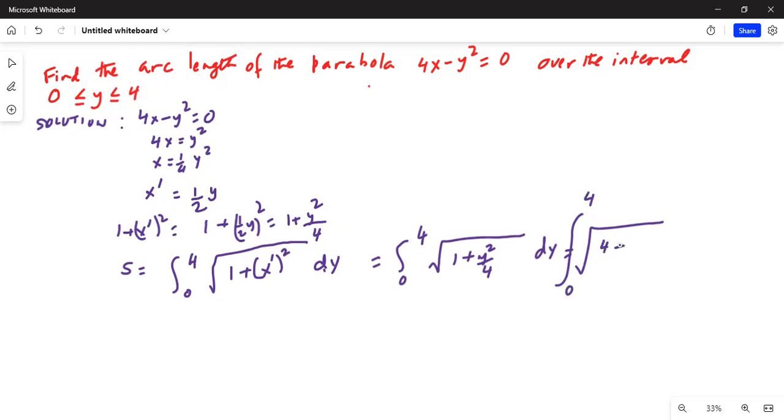This can be further simplified as the integral from 0 to 4 of the square root of 4 plus y squared divided by 4 dy. So S equals one-half times the integral from 0 to 4 of the square root of 4 plus y squared dy.